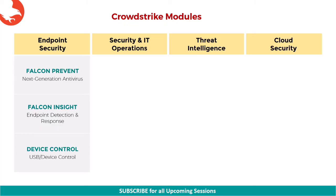The next module is Falcon Insight, which is the EDR module, that is Endpoint Detection and Response. Falcon Insight acts like a DVR on the endpoint, recording activity to catch incidents that evaded prevention measures. It ensures customers have comprehensive, real-time visibility into everything happening on their endpoints from a security perspective, eliminating the risk of silent failure, which allows intruders to remain in your environment undetected. Falcon Insight detects indicators of attack, enables proactive threat hunting both in real-time and historically across an entire environment.